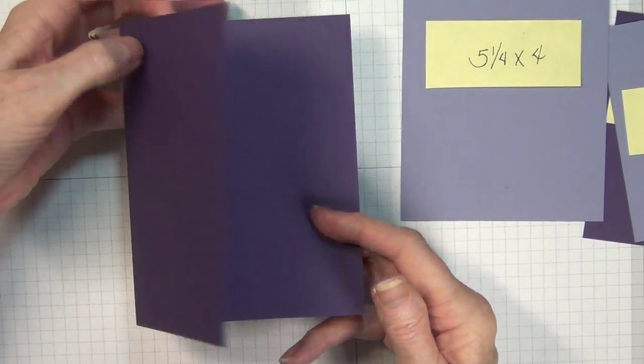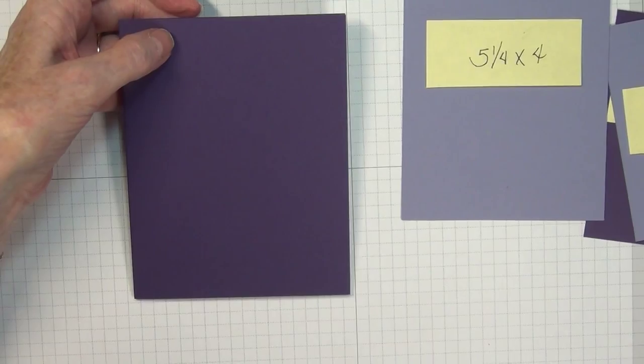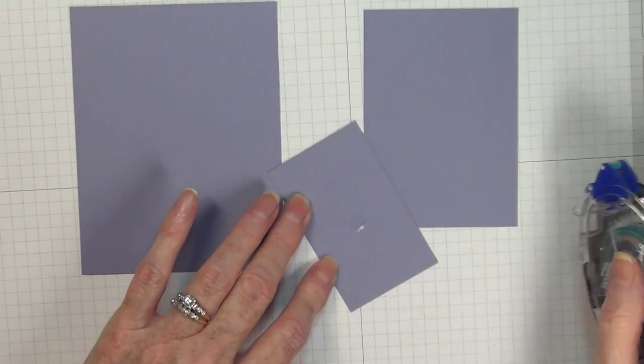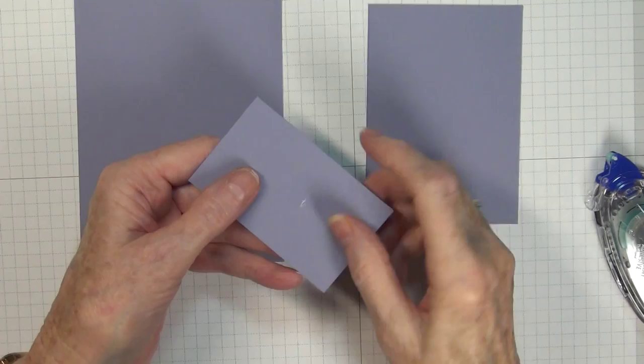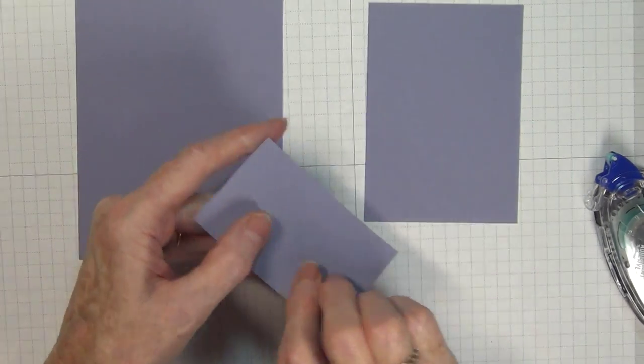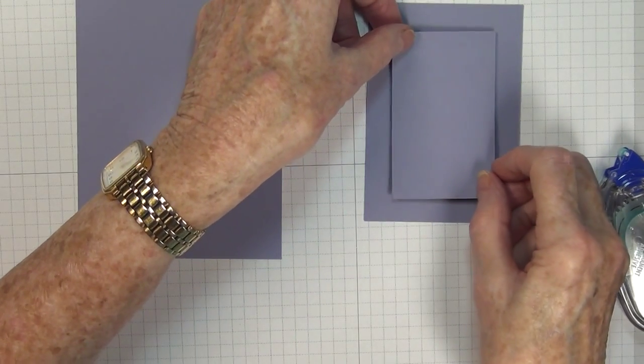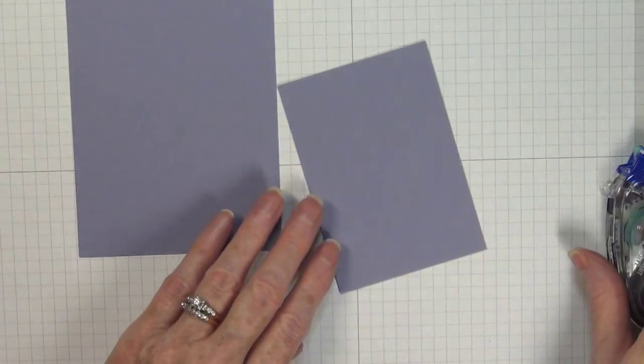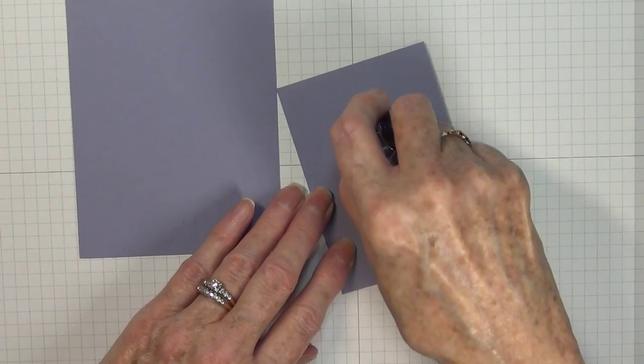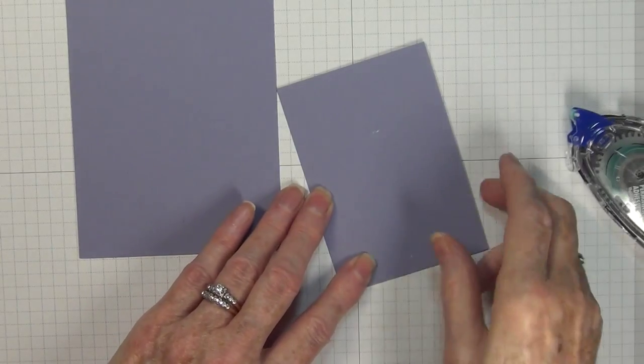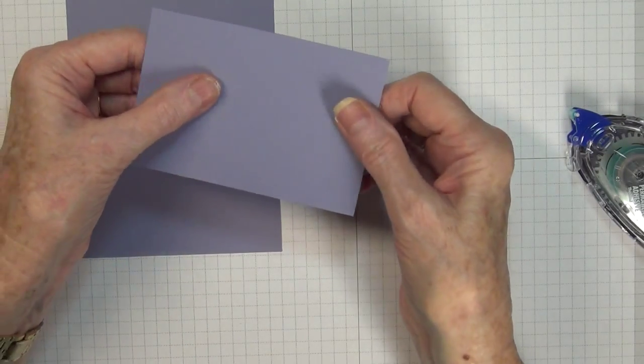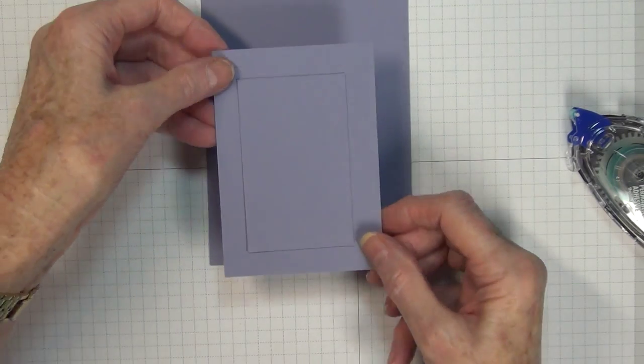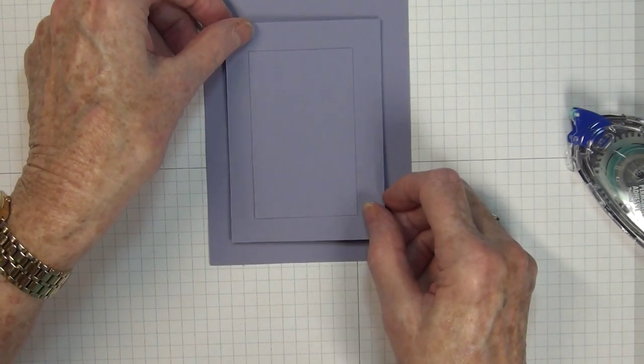Our last panel is our card. First of all, what we're going to do to prepare these is I'm adding just a little bit of snail to the back, and you can see that I'm trying to remove a little bit of that tackiness by tapping on that two or three times. With this particular one, I'm going to put two little spots of adhesive, then I will mount that so that I have all three panels lined right up.